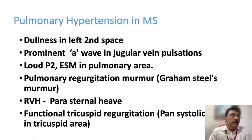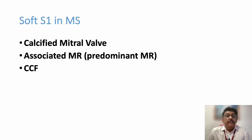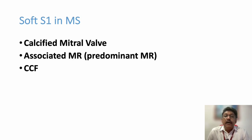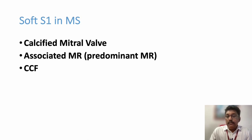Complications are not early in mitral stenosis — they occur very late — but repeated attacks of rheumatic heart disease can produce early pulmonary symptoms. Normally in mitral stenosis there is a loud S1 due to the tight valve closing with a high-intensity sound. However, S1 is blunted in conditions like a calcified mitral valve, dominant mitral regurgitation (where valve leaflets don't approximate closely), and congestive cardiac failure with left ventricular dilatation.